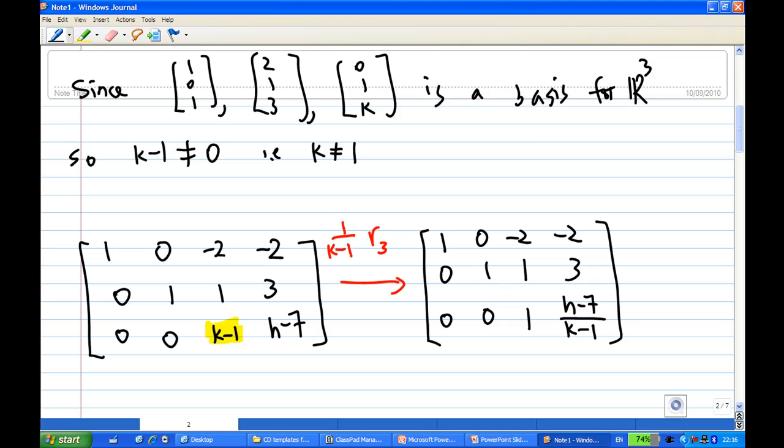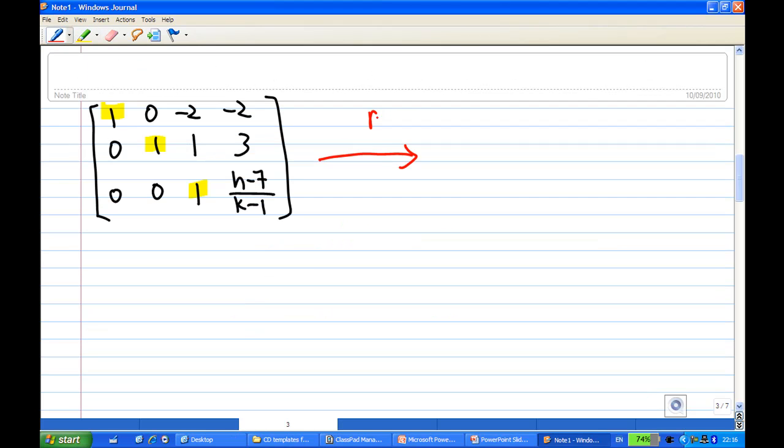Now after I have created this leading 1 in the third row, I have leading 1 in the first row, second row, and third row. Now I have to make sure that entries above leading 1 are 0. Third row times minus 1, add to second row. I'm going to get third row (0, 0, 1, (h-7)/(k-1)). And the second row becomes (0, 1, 0, 3 minus (h-7)/(k-1)).